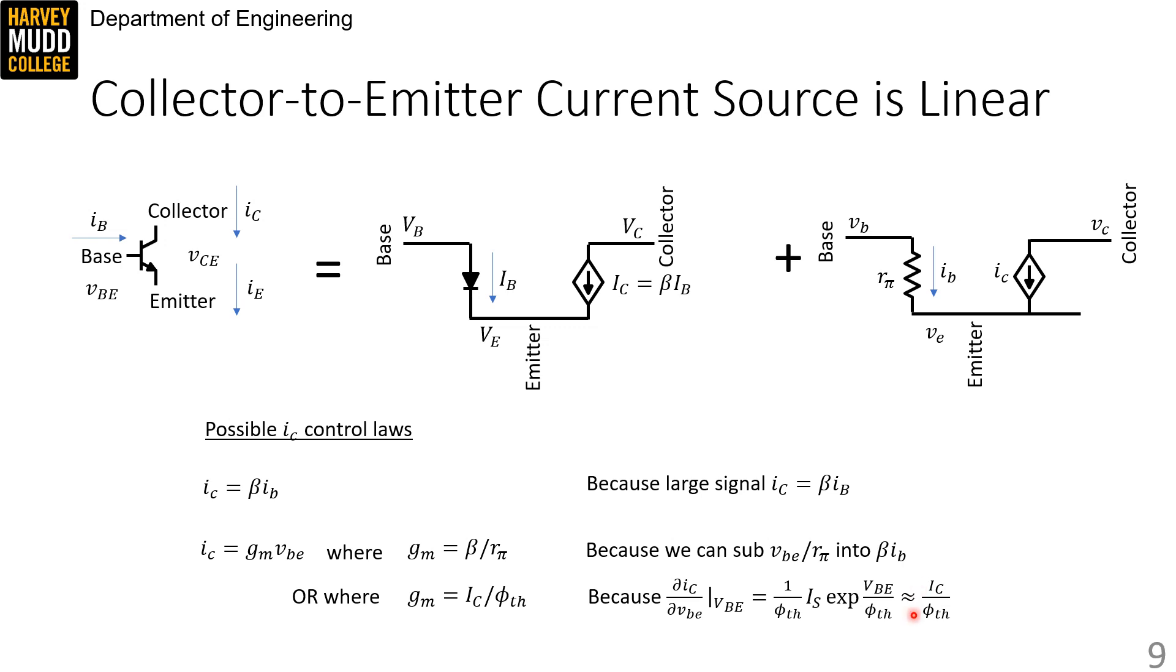And so IC over Phi TH is going to be equal to GM because GM is a conductance. I use this formula to find GM slightly more often than I use beta over Rpi.